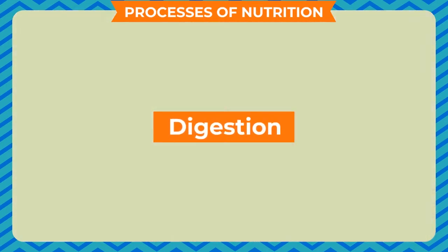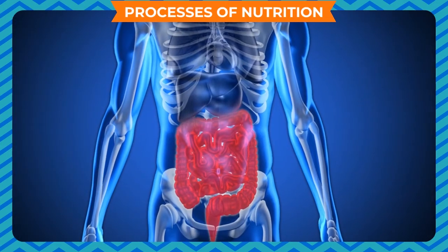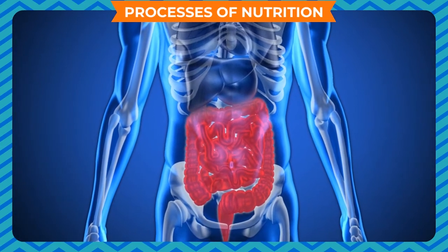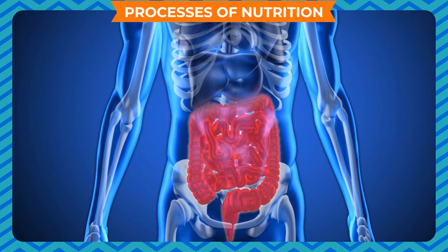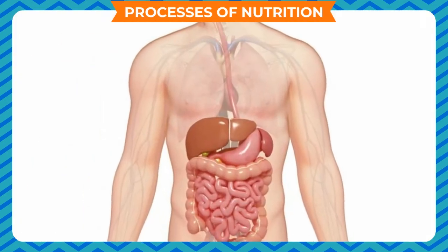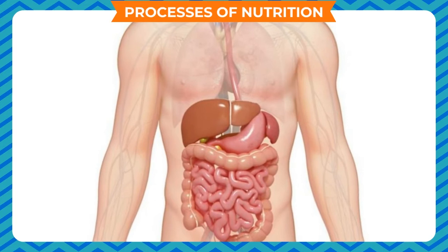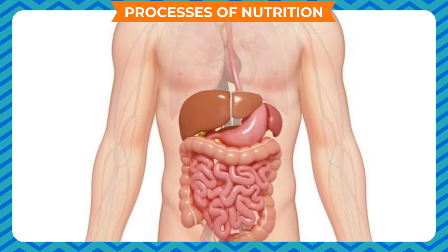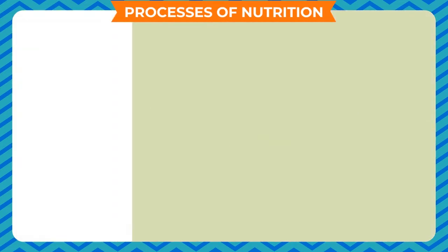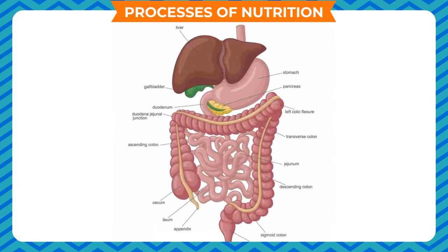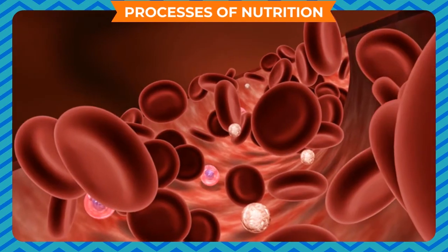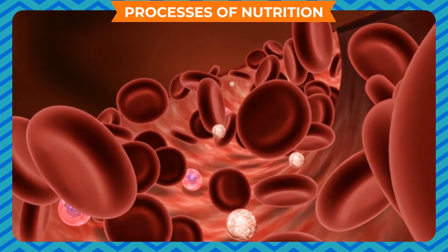Digestion: The process of breaking down the food into simpler substances so that it can be absorbed easily. This is done by the actions of enzymes and digestive juices in the digestive system. Absorption: It is the process of absorption of digested food from the digestive system by the blood streams.